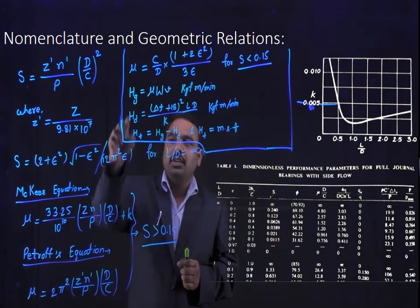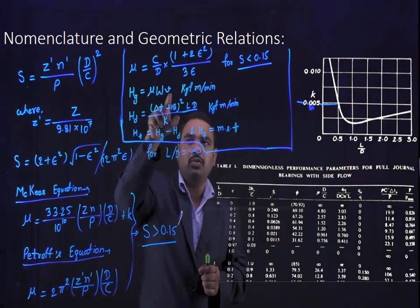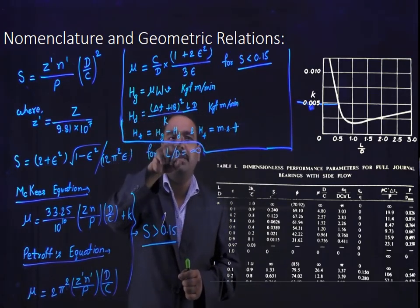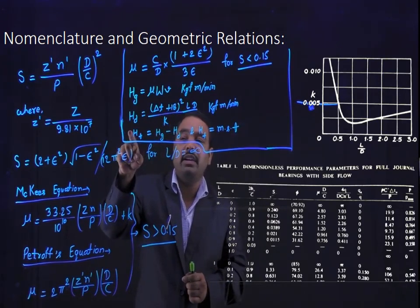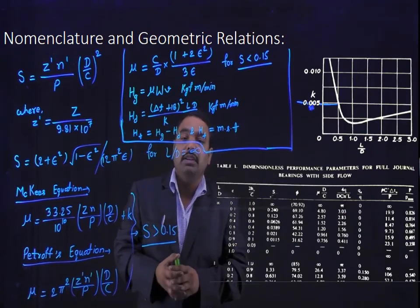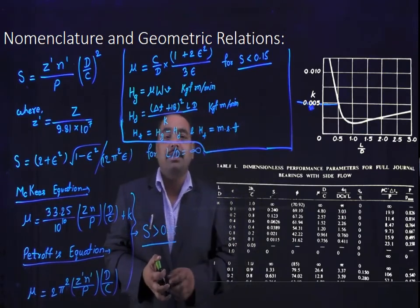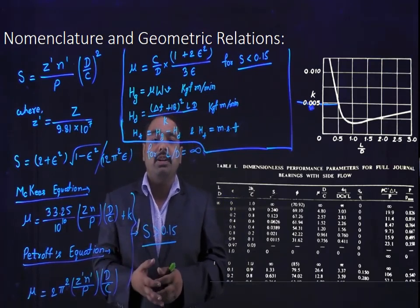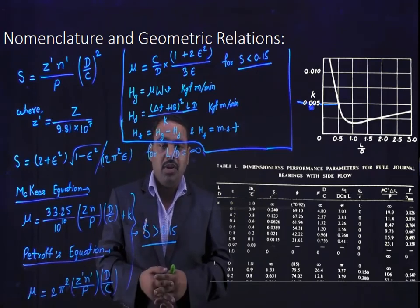Then calculate the heat generated Hg, and after that calculate heat dissipated Hd. Then calculate the heat to be removed by artificial cooling HT = Hg minus Hd. Finally, calculate the artificial cooling quantity required — the mass of cooling liquid needed per hour.